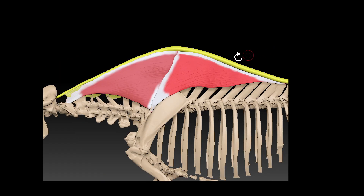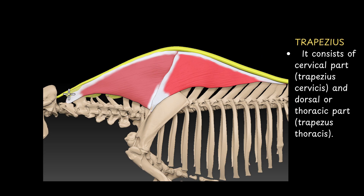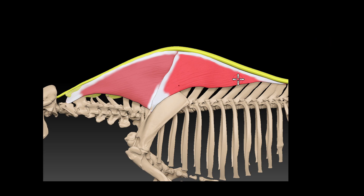Trapezius consists of two parts. The whole muscle is the trapezius muscle. So this part is called trapezius cervicis — the cranial part — and this part is called trapezius thoracis — the dorsal part. So trapezius muscle has two parts: trapezius cervicis and trapezius thoracis.